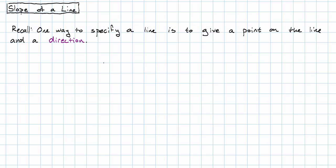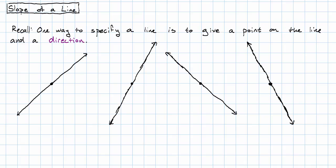Let me draw some lines that go in different directions. These four lines are all in different directions — they are not parallel. How could we describe the different directions that these lines go in? One way is in terms of the grid behind them. This line, each time it goes one unit to the right, goes up one unit.